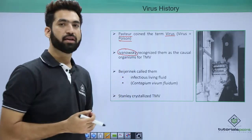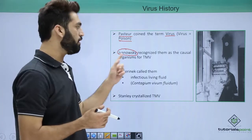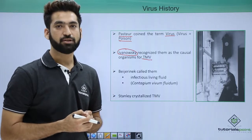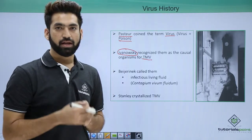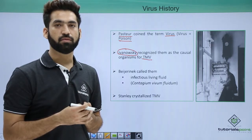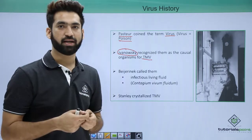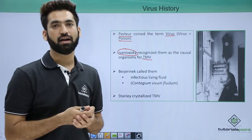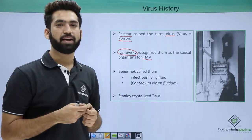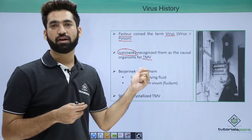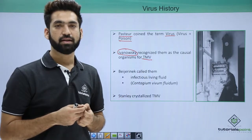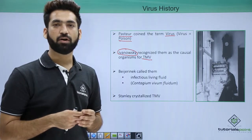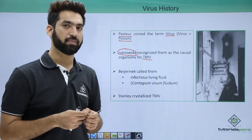The second person is Ivansky. Ivansky first identified viruses as the causal organism of TMV — tobacco mosaic virus. He took fluid from tobacco plants that were showing mosaic nature — leaves with spots rather than uniform green color — and identified viruses as the cause.